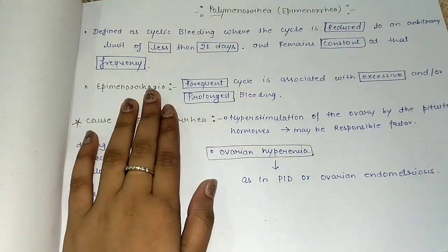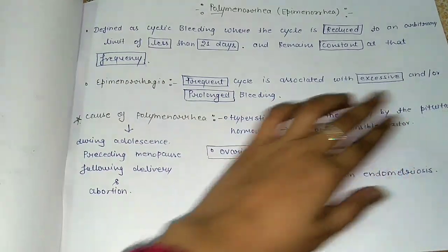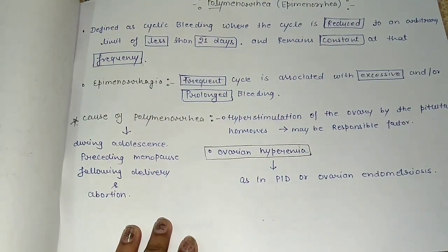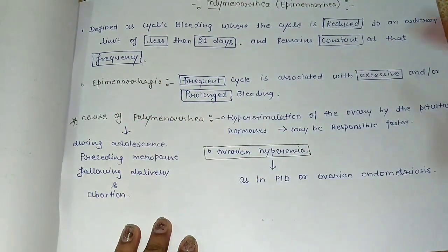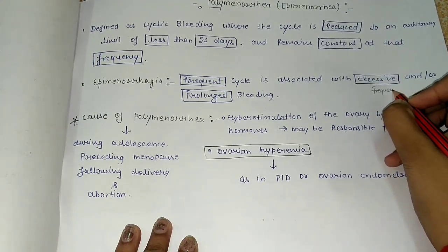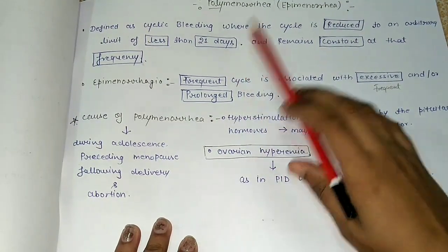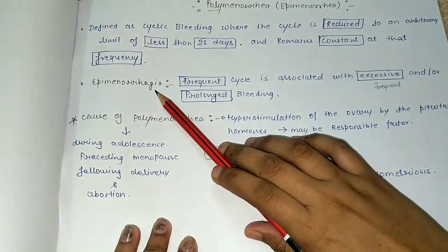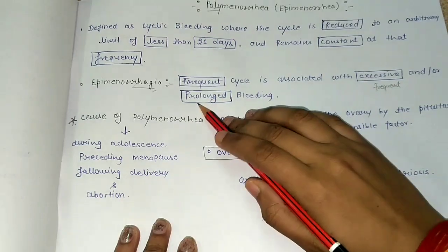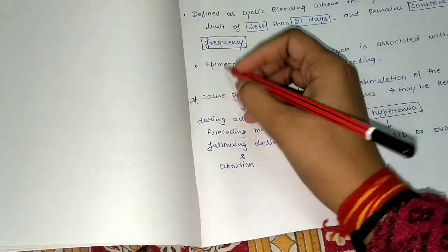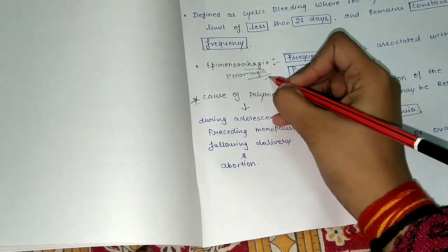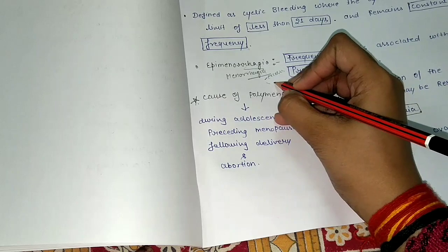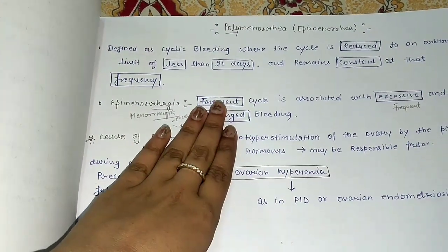Epimenorrhagia - what is epimenorrhagia? Frequent cycle is associated with excessive and prolonged bleeding, meaning frequent cycle is coming up and it is excessive and prolonged bleeding. So in epimenorrhagia, the main thing is frequent cycle, less than 21 days, with excessive and prolonged bleeding like menorrhagia.